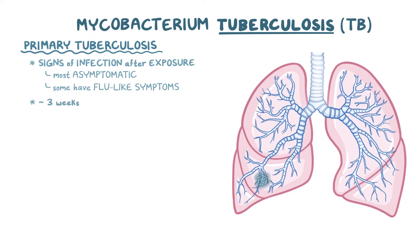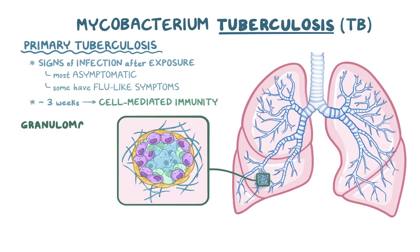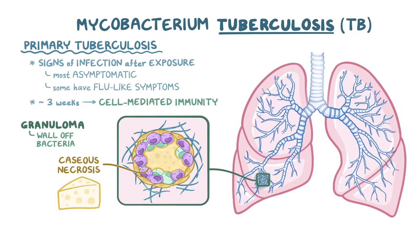About three weeks after initial infection, cell-mediated immunity kicks in, and immune cells surround the site of TB infection, creating a granuloma — essentially an attempt to wall off the bacteria and prevent it from spreading. The tissue inside the middle dies as a result, a process referred to as caseous necrosis, which means cheese-like necrosis, since the dead tissue is soft, white, and looks kind of like cheese. This area is known as a Ghon focus.